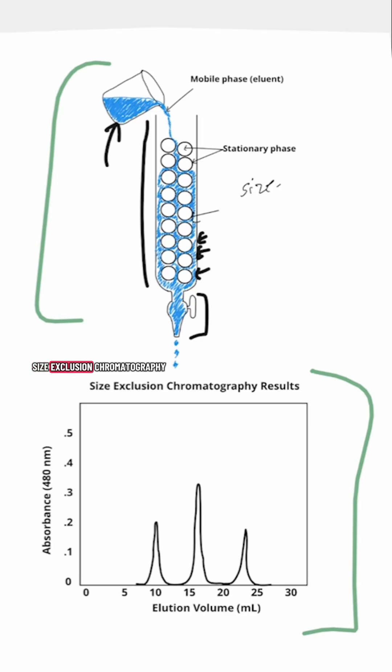We're going to be talking about size exclusion chromatography, which is also called gel filtration. The beads in gel filtration have a bunch of holes in them. The molecules that are in the solution that we're pouring into this column can then go inside of the beads through those holes.